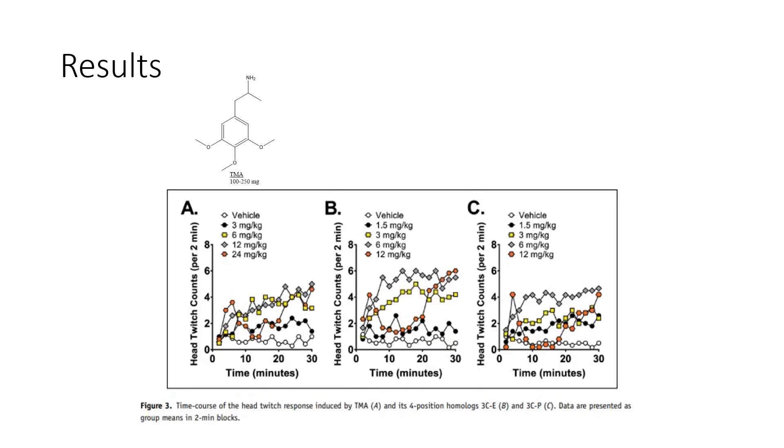The next finding in this publication comes from the researchers injecting the drug TMA into the rodents. We can see that at 12 mg/kg, the drug is producing the strongest effects because it is having the most head twitch counts. When we go from TMA to 3CE, we do so by changing the fourth position methoxy group to an ethoxy group. We see this drug has much stronger effects as the head twitch counts have gone up by a decent factor.